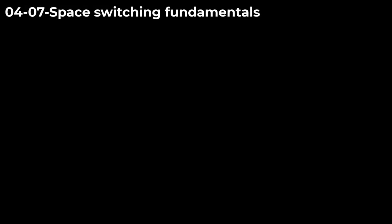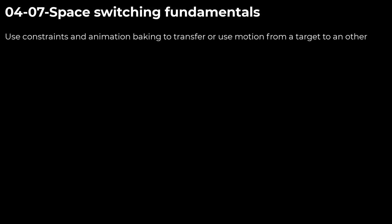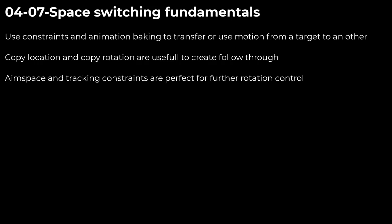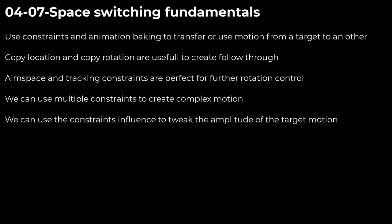To summarize: we have seen that we can use constraints and animation baking to source data from a specific motion and transfer them onto another bone or object. We can use copy location and copy rotation to create nice follow-through animation with ease. We can have even more control over rotation using a tracking constraint such as the damped track constraint. We can use multiple constraints to create complex mechanisms in a few clicks. And finally, we can use the influence of the different constraints to add more or less amplitude to the motion we are creating.